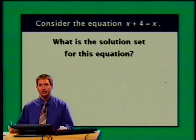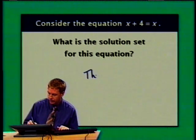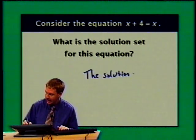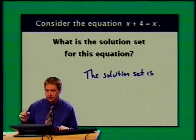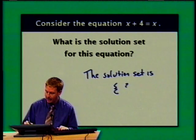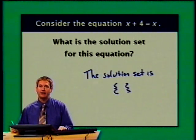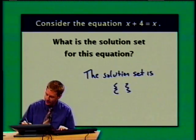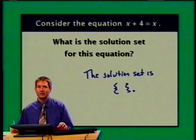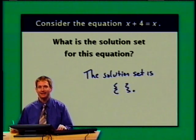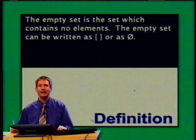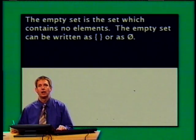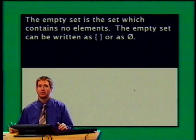What is the solution set for this equation? The solution set is the set that contains the solutions to the equation. I write my set braces and set out to write the numbers that satisfy the equation inside them. There are no such numbers, so I'm done. My solution set is empty, and a set that is empty is called the empty set. The empty set is the set which contains no elements. I can write it as empty set braces, or using the special symbol.